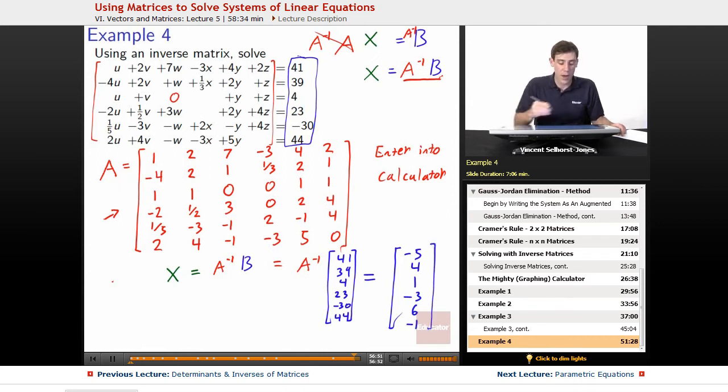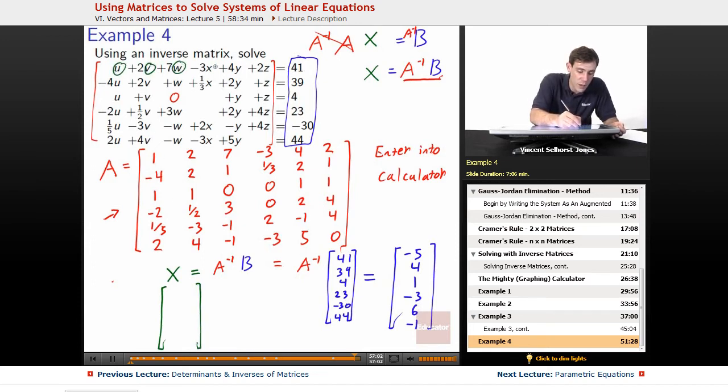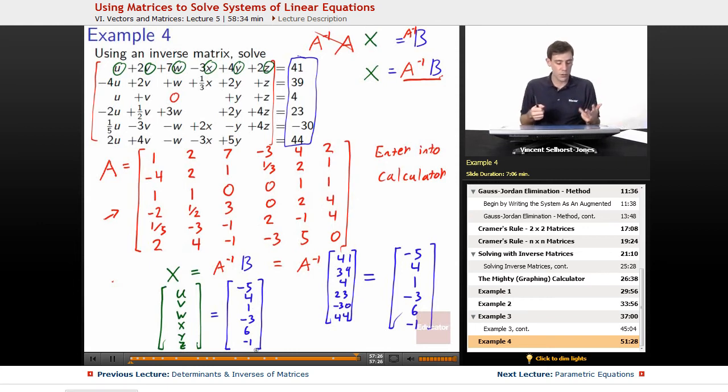So we just figured out X equals our X as all of our variables at once. Well, X is equal to what were all of our variables? It was U. And then we put in V and then we put in W and then we put in X, Y, Z. So they go that order in our column, U, V, W, X, Y, Z equals this thing that we just punched out, negative 5, 4, 1, negative 3, 6, negative 1. So U equals negative 5, V equals 4, W equals 1, X equals negative 3, Y equals 6, Z equals negative 1.